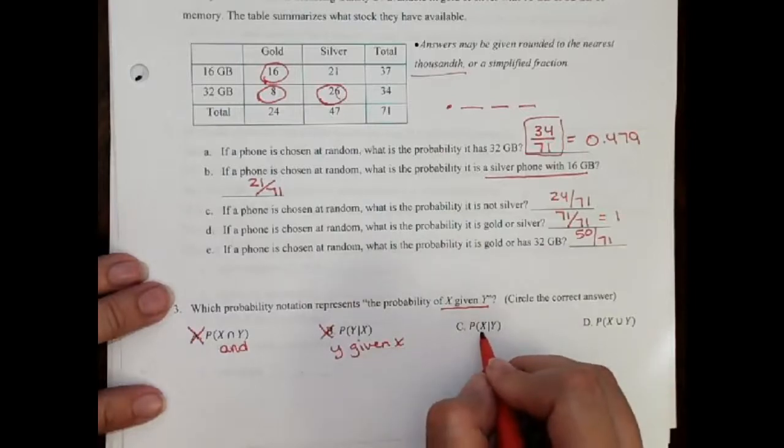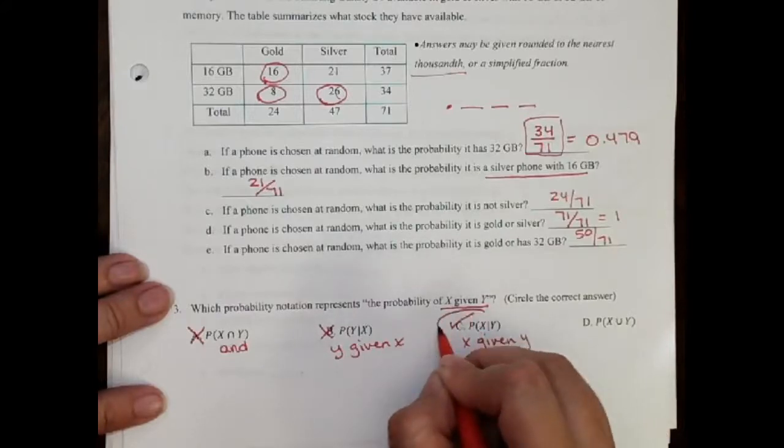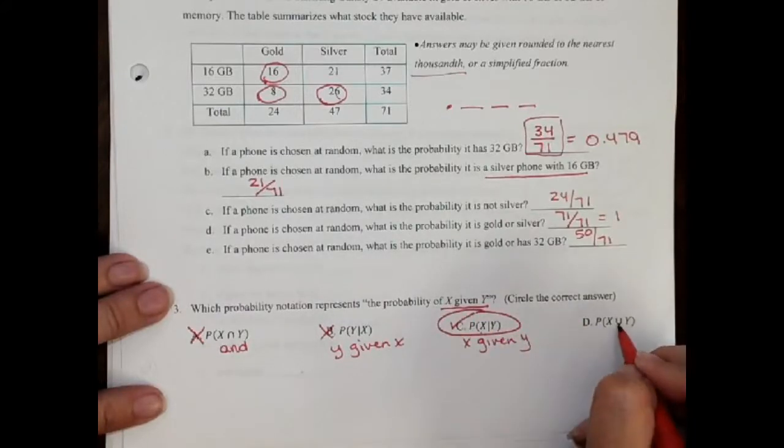This one is X given Y. So this one is the right answer. And this one here, what does that mean? That means or. So that's not right.